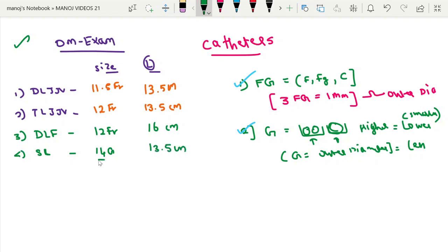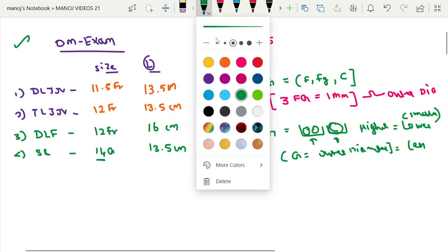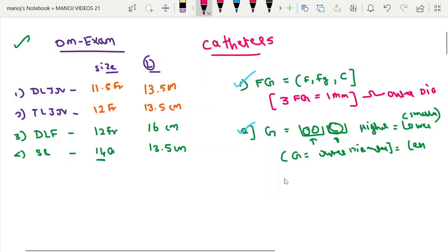So it is equal to approximately 2 French. Here I forgot to mention the gauge equivalent, 7 gauge equal to 1 mm. So this is 14 gauge, that means approximately 2 mm. So it is 6 French, approximately it is coming as 6 French.